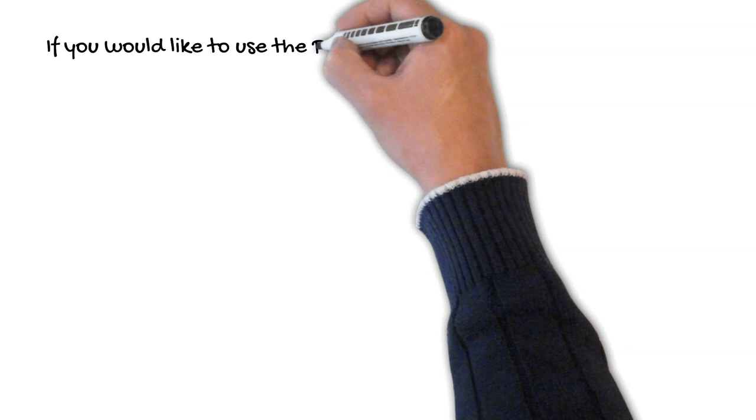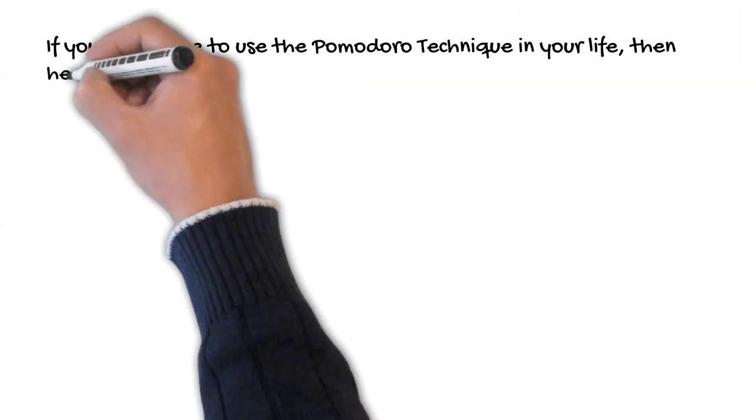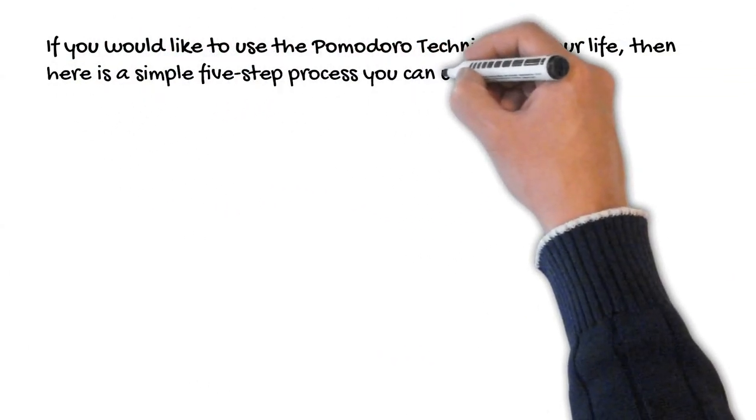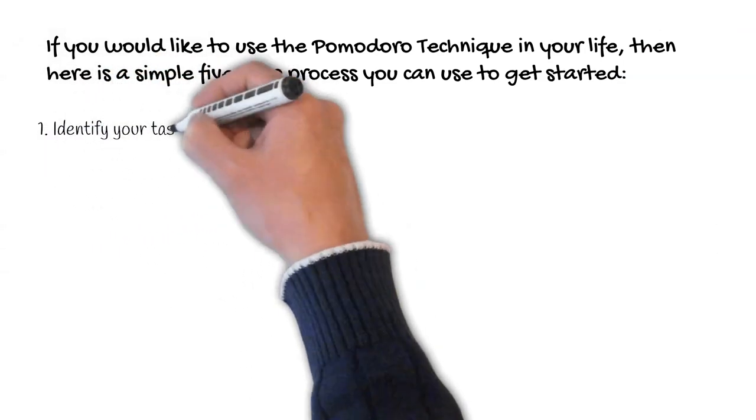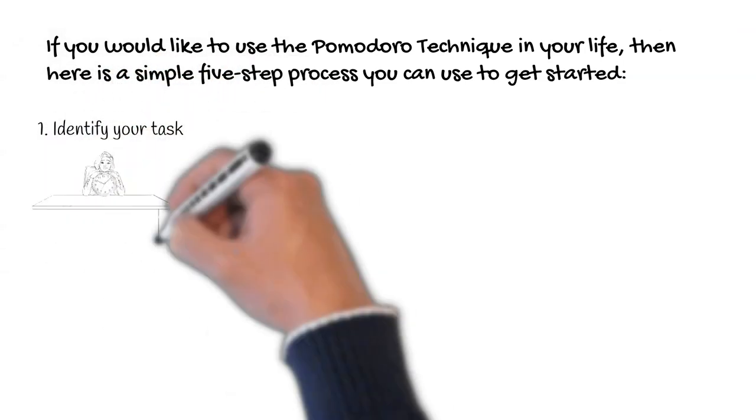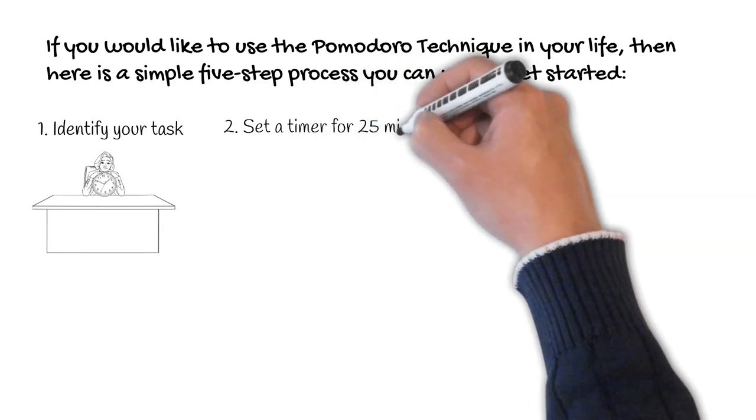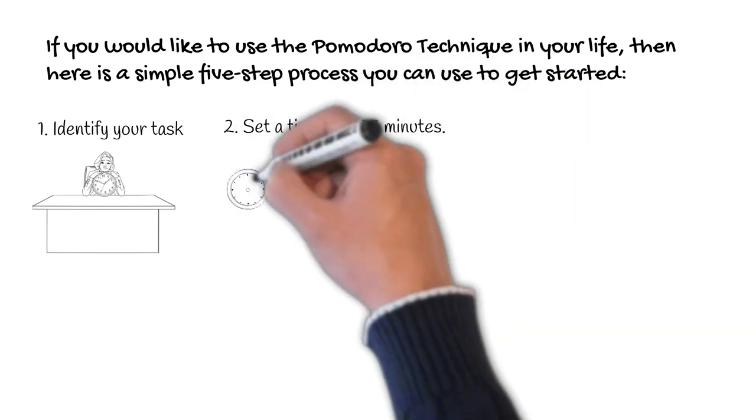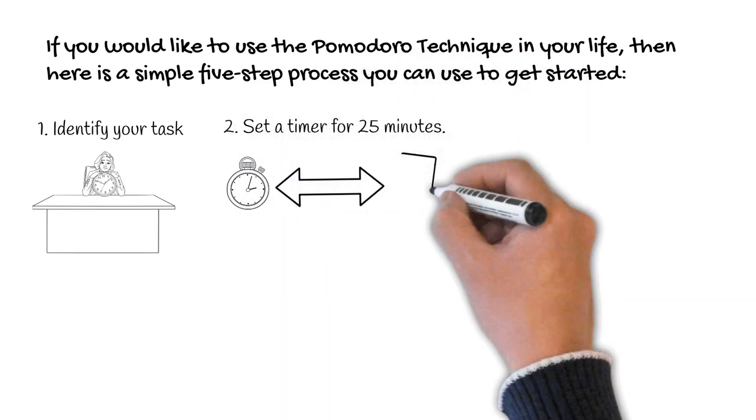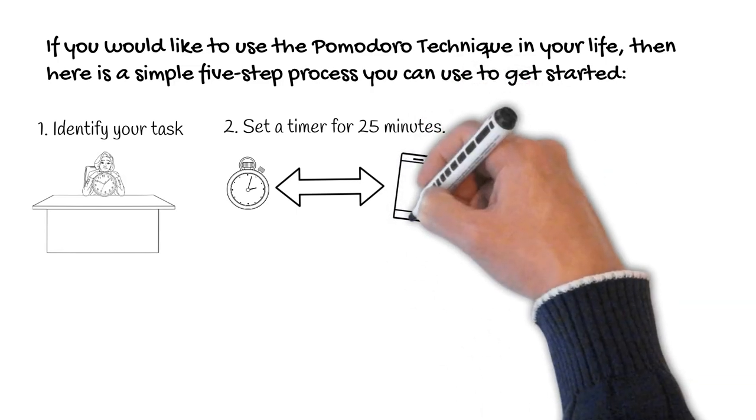So if you would like to use the Pomodoro Technique in your life, then here is the simple five-step process to get you started. Number one, identify your task and the amount of time you will dedicate to it. Set a timer for 25 minutes. If you want to use an app, then we have a list of seven Pomodoro apps to try, link in the description box.